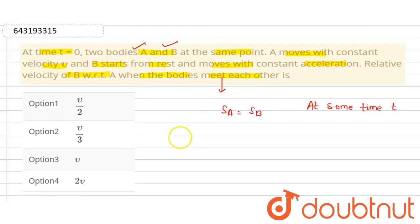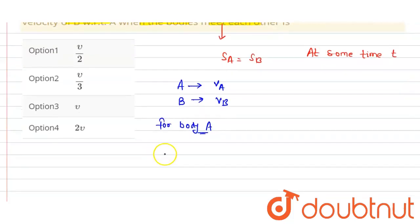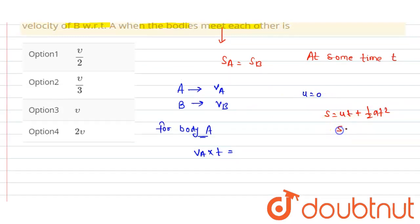For body A, velocity is Va, and for body B, velocity is Vb. For body A, distance equals velocity of A into time. For body B, initially it is at rest, so U equals 0, and we know that S equals Ut plus half A t squared. Since U equals 0, S equals half A t squared.